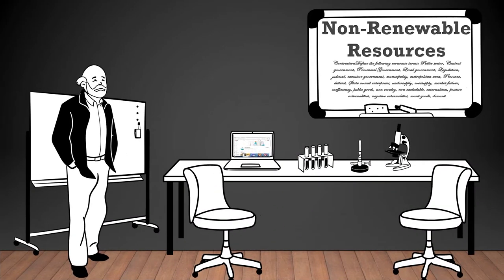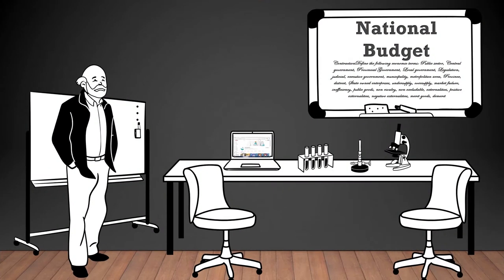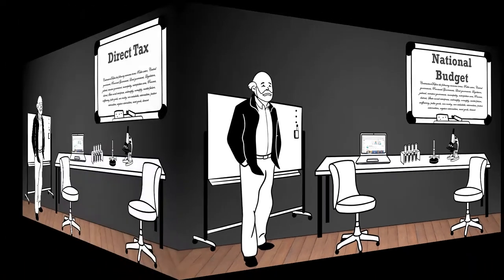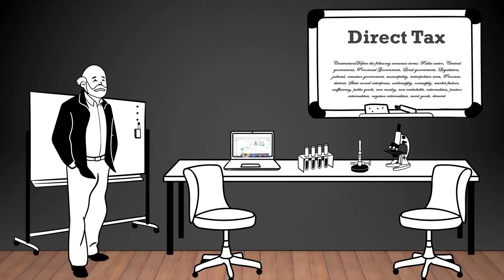Non-renewable resource: a resource that cannot be replenished within a human lifetime, such as fossil fuels. National budget: a comprehensive plan outlining the government's expected revenue and expenditure for a specific period. Direct tax: a tax that is directly imposed on individuals or entities, such as personal income tax or corporate income tax.